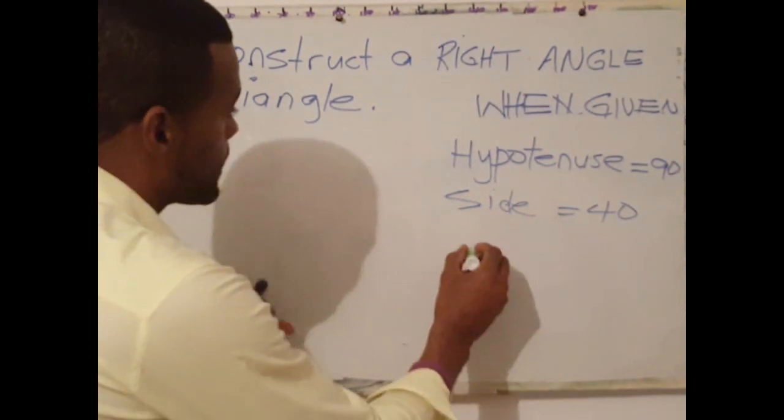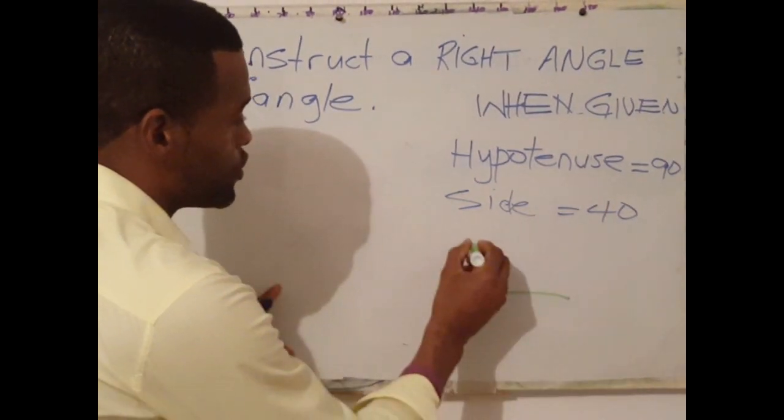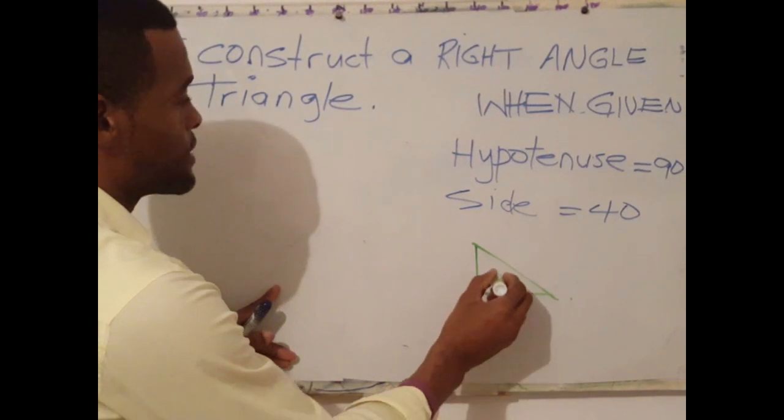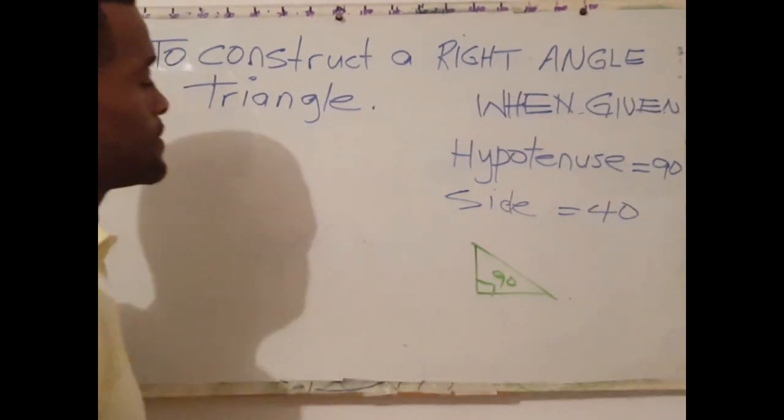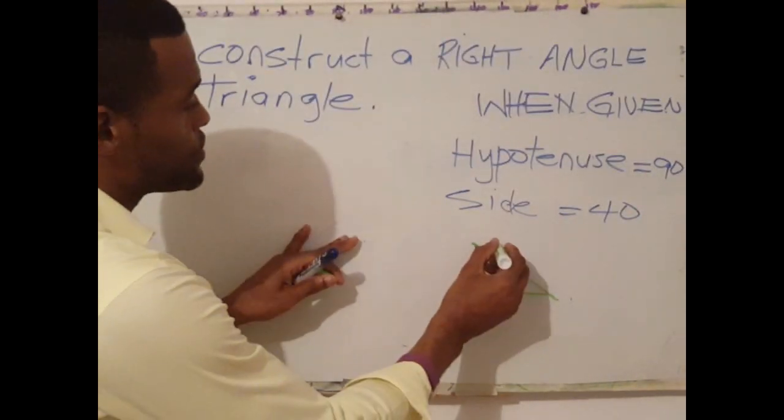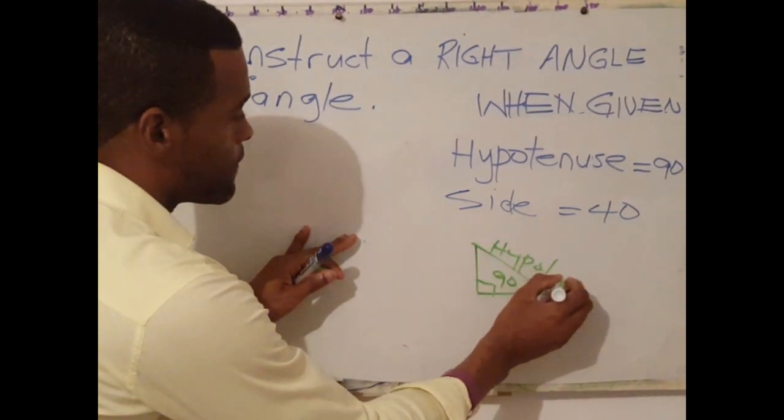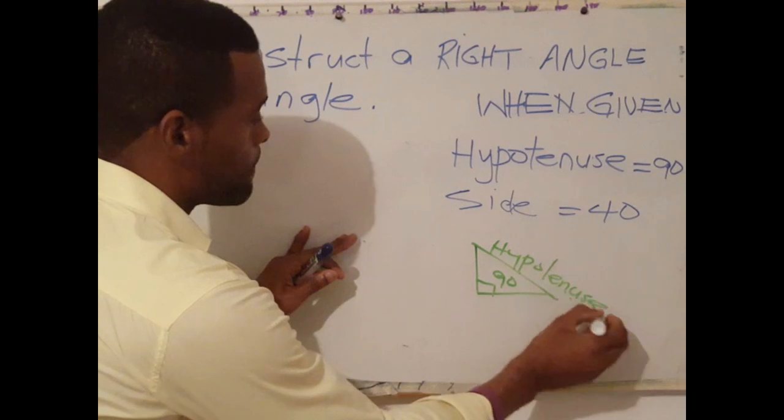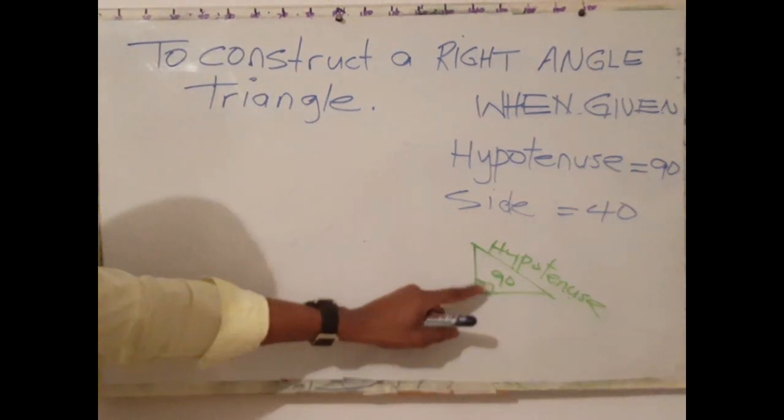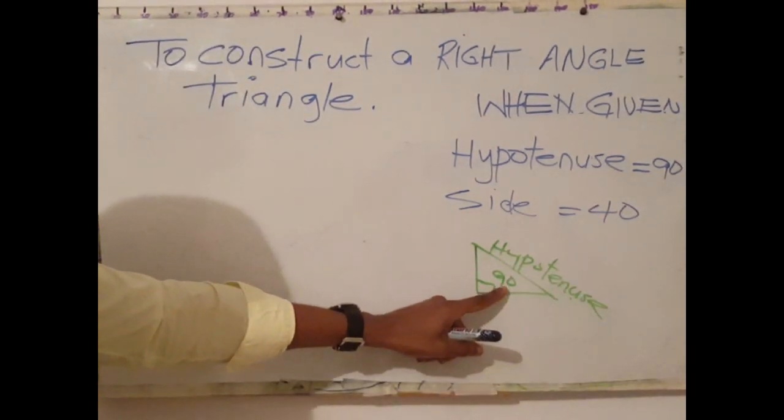A right angle triangle, as we know, has one angle measuring 90 degrees. The hypotenuse is the side adjacent to the right angle.